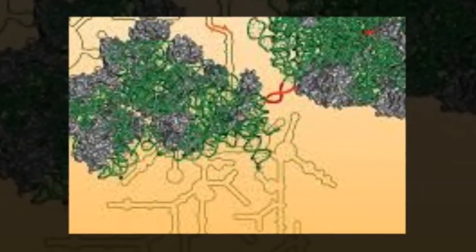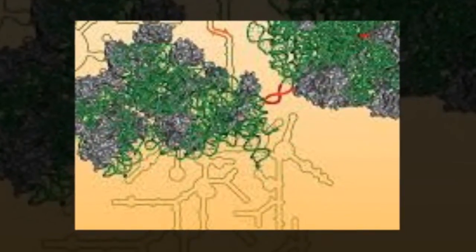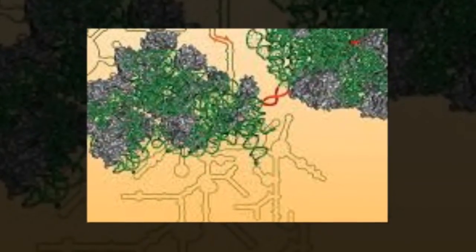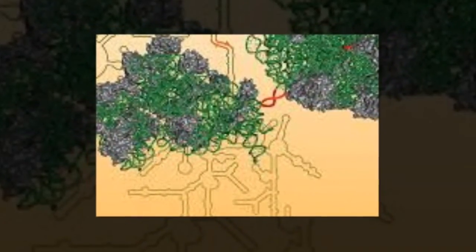The human-made ribosome may be able to be manipulated in the laboratory to do things natural ribosomes cannot do. When the cell makes a protein, mRNA, messenger RNA, is copied from DNA.